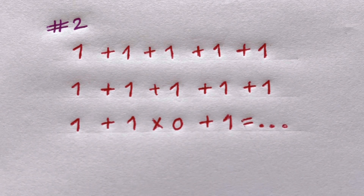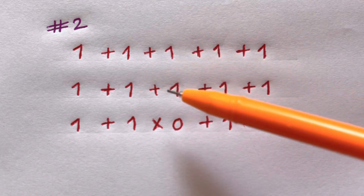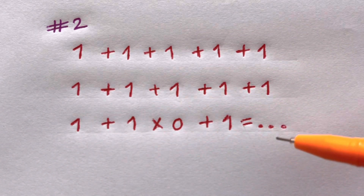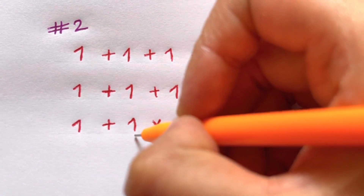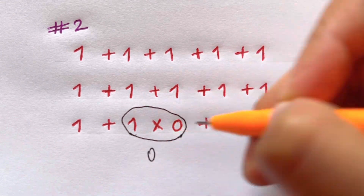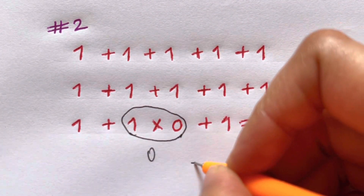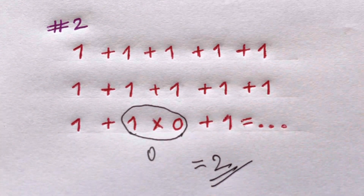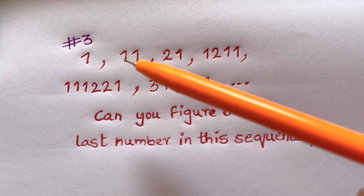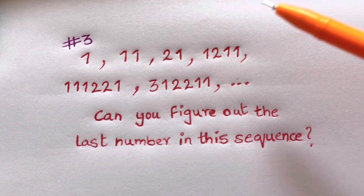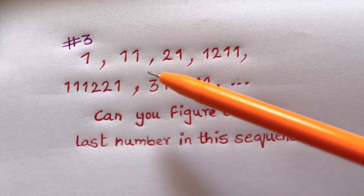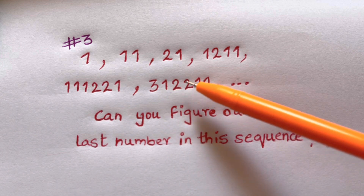The answer is not one, and not even 12. The first two lines are part of the equation, but only the last line is what matters. One times zero is just zero, and you have one plus one, which equals two — and that's your answer.